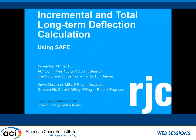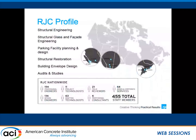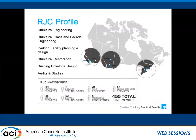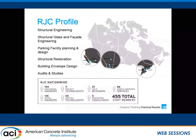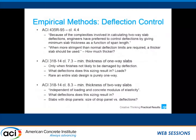Thanks for the introduction, Dylan. I'm Graham, and this is Kevin. Just quickly to profile RJC: we're a specialty structural engineering and building science firm across Canada with over 450 employees. Kevin and I are based in the Toronto office.